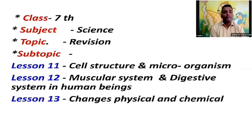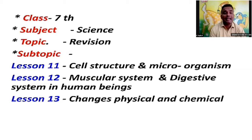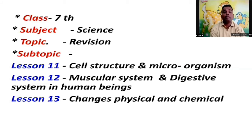On page number 71 there is a flow chart. Whenever many letters come together they form a word. Whenever many words come together grammatically, they form sentences. Whenever many sentences come together they form a paragraph, and whenever many paragraphs come together they form a chapter, and finally many chapters form a book.